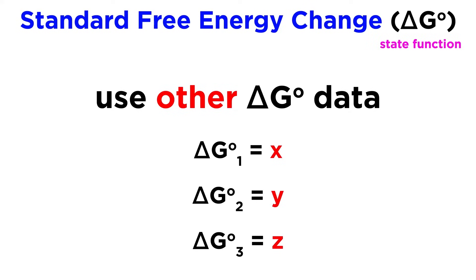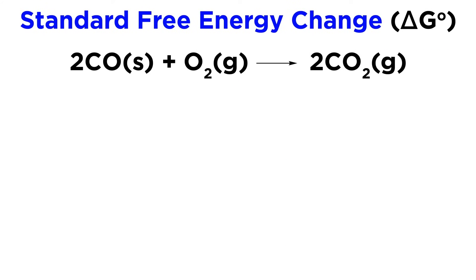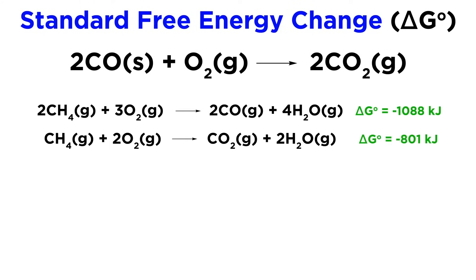This is because free energy, like enthalpy, is a state function. We can see this here with carbon monoxide and oxygen forming carbon dioxide. We can look at other reactions to get the information we need. We have two separate reactions involving the combustion of methane and their associated delta G values.